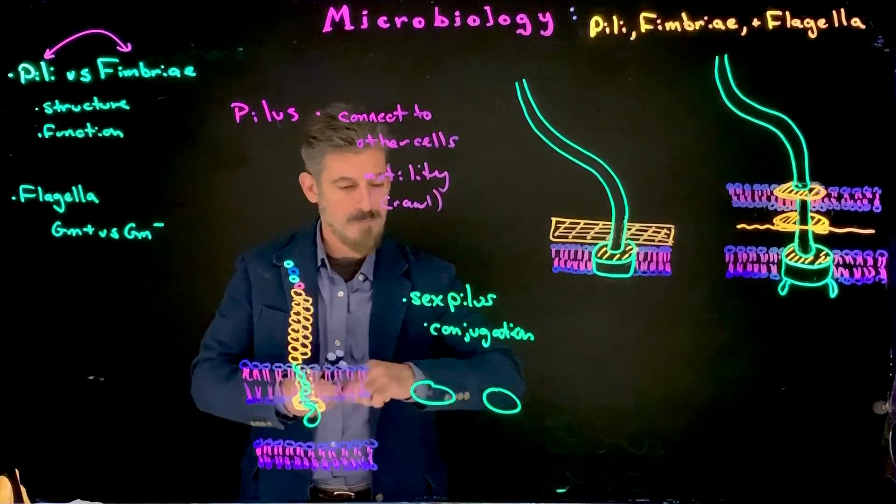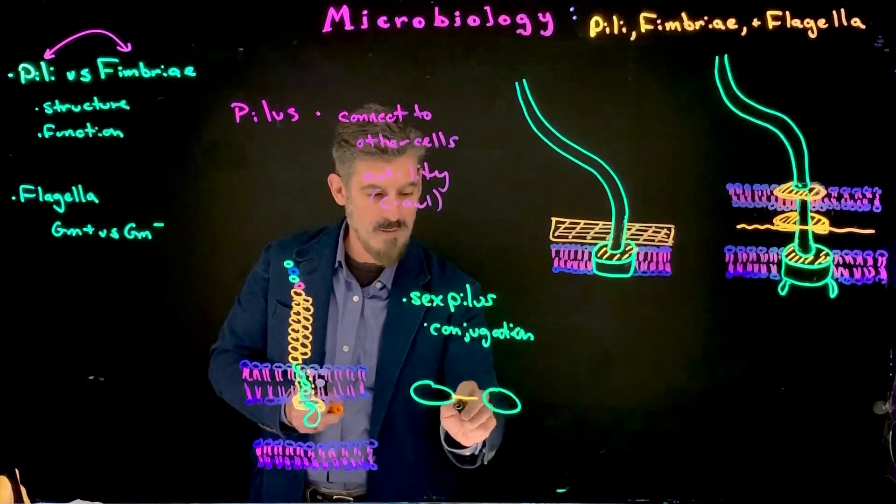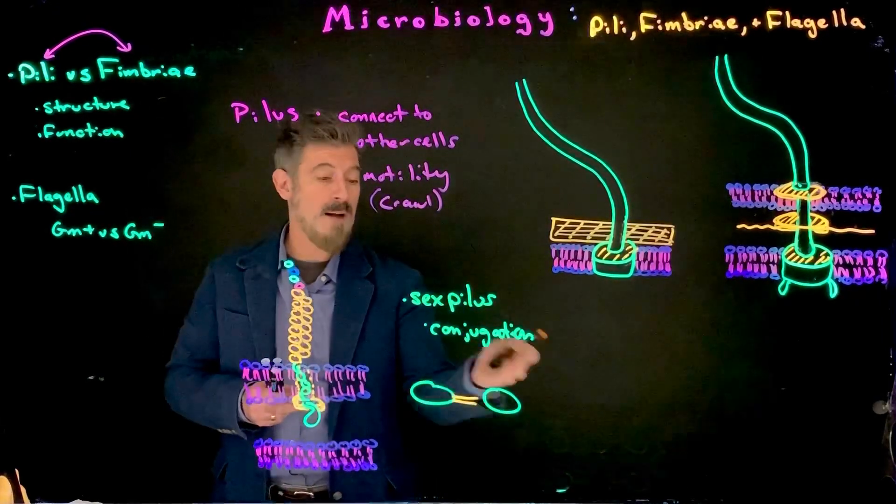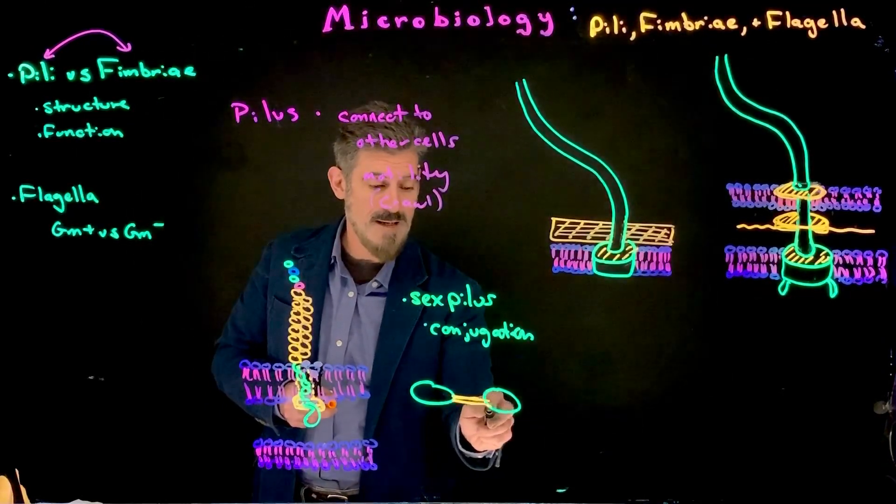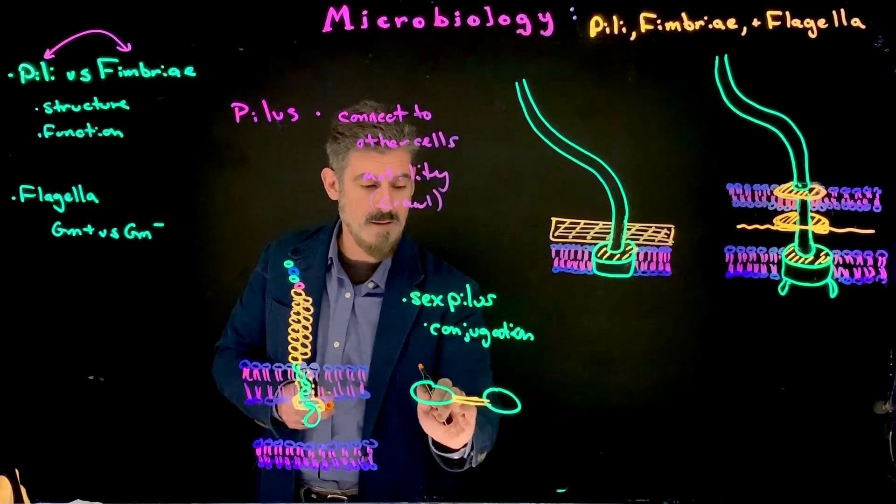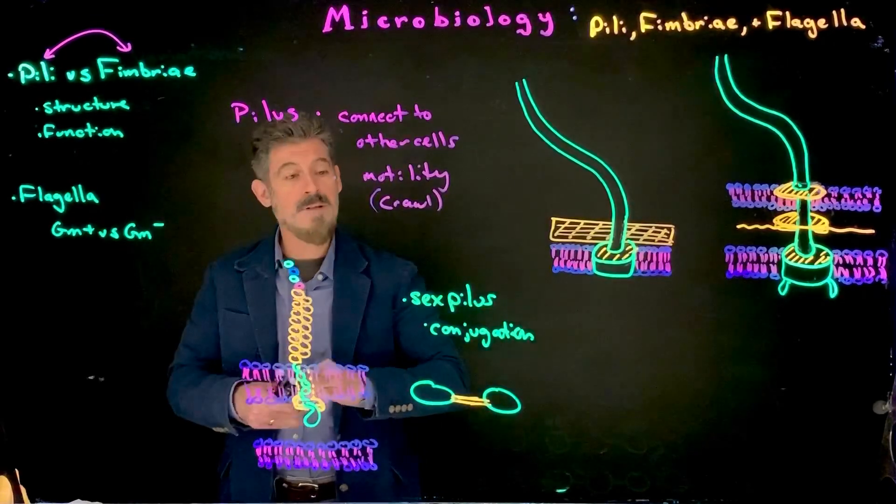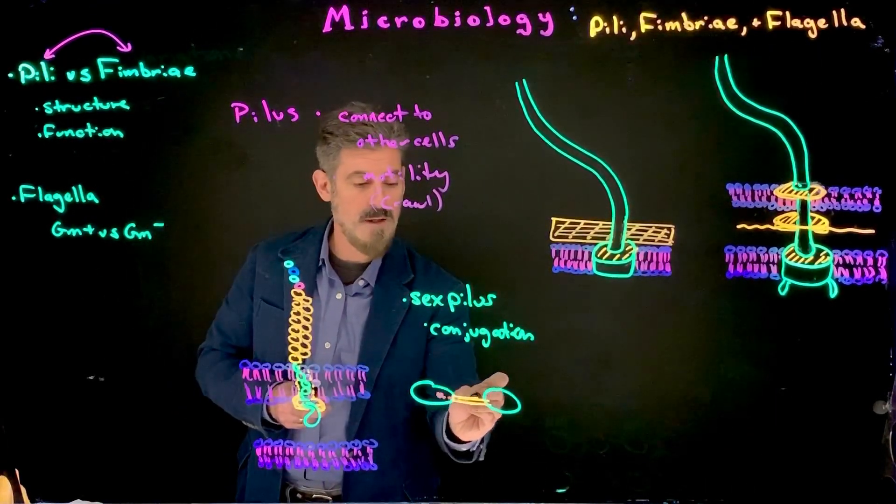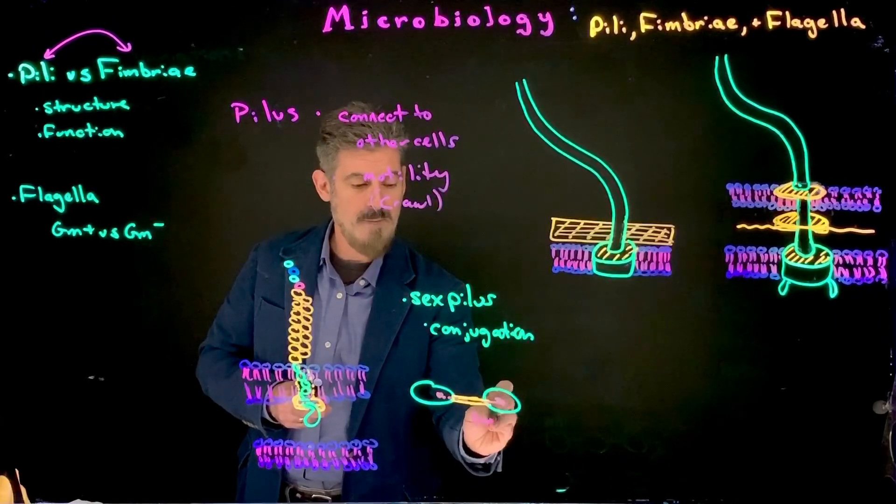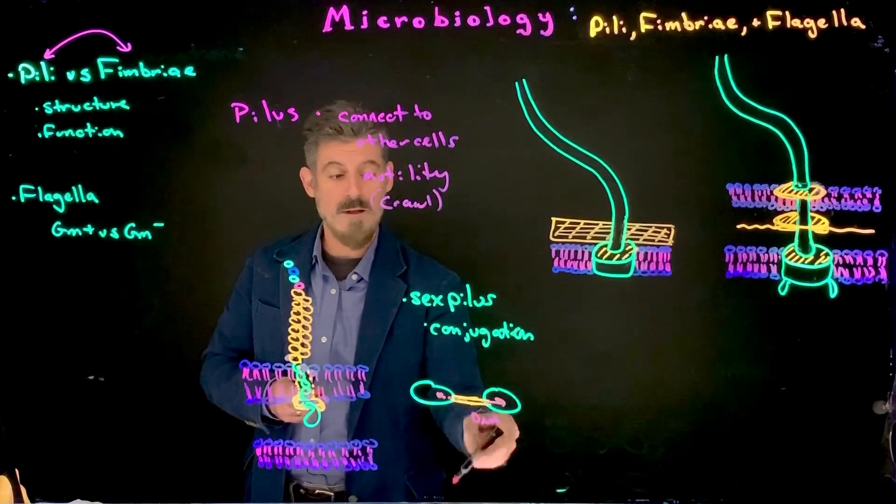And then there's an extension, essentially from one cell, who can construct the pilus. And in this case, the other cell cannot construct it. And then the structure actually connects the two cells together, like this. And the sex pilus, as it kind of sounds, it's used specifically for the transfer of genetic information. So DNA is transferred from one cell to another.